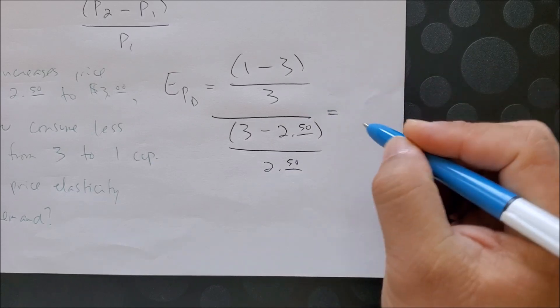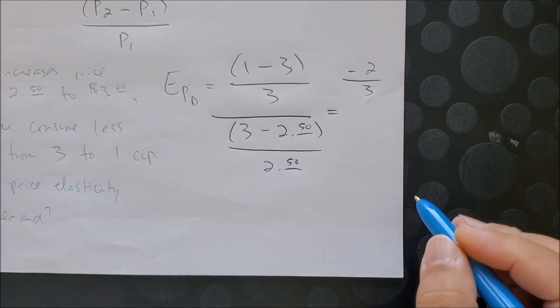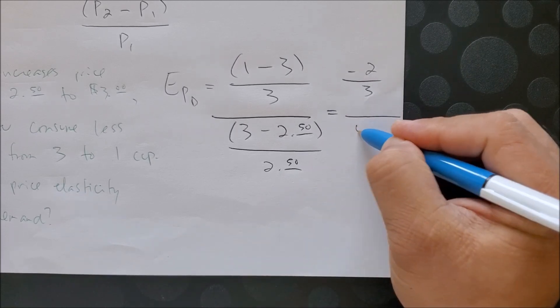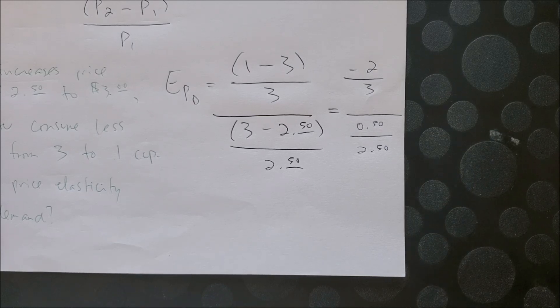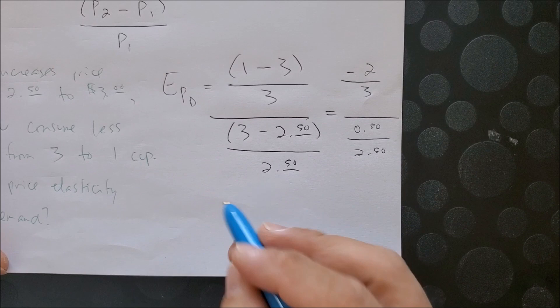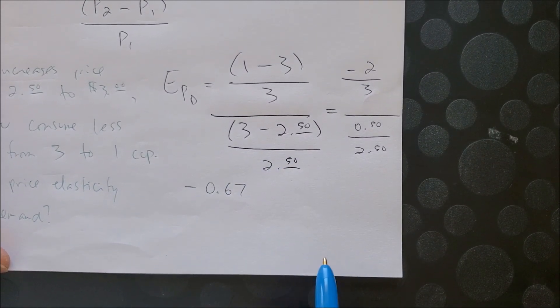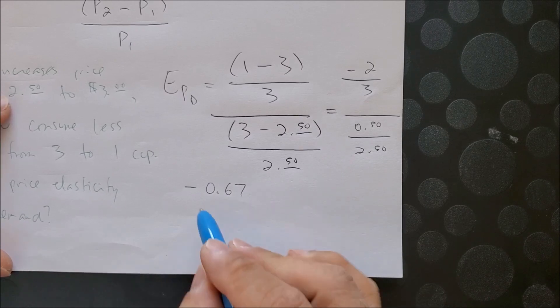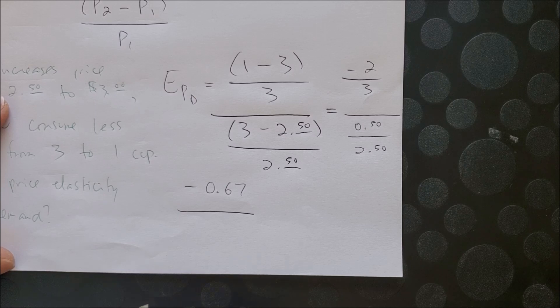So what we get here on the numerator, we're bound to get negative 2 over 3, over 0.5 over 2.5. So now we can solve the numerator. We're bound to get negative 0.67, I'll round to the nearest hundredth, so 0.67. And for the bottom one, we're bound to get 0.2.